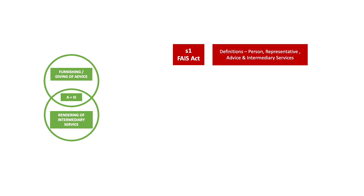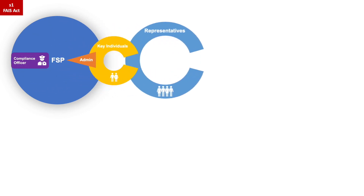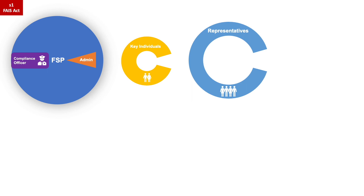First, we look at Section 1 of the FAIS Act. Here we have an illustration of an FSP that is split out into its components — being the representatives, key individuals, administration and the compliance officer — who ultimately all play a role in the FSP providing financial services to a client.